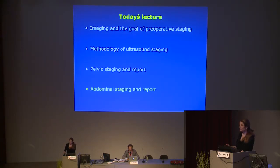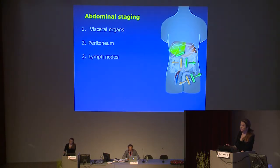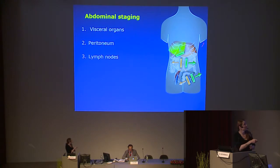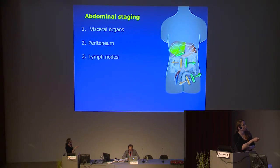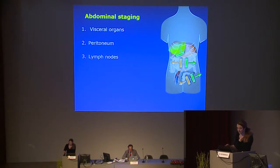Moving to abdominal staging and report: in order to assess the abdomen, the same as with the pelvis, we should perform the scan systematically. It is really important to assess metastases in the liver and spleen, then the metastatic lesions in the peritoneum, and lastly the retroperitoneal lymph nodes — including those around the mesenterial vessels and visceral branches of the aorta.